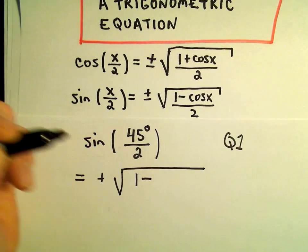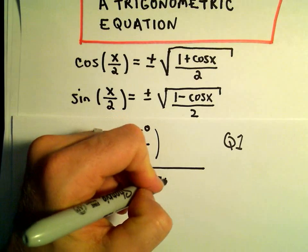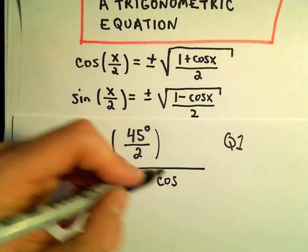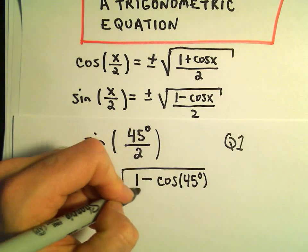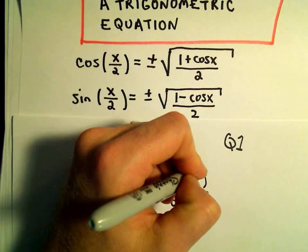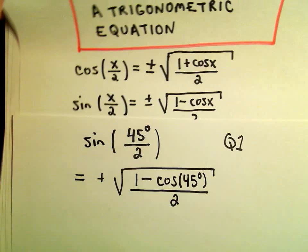Square root. It says all you have to do is you take 1 minus cosine of whatever value's on top. So that'll be 45 degrees. And then we simply divide all of that by 2, and that'll give us our value.